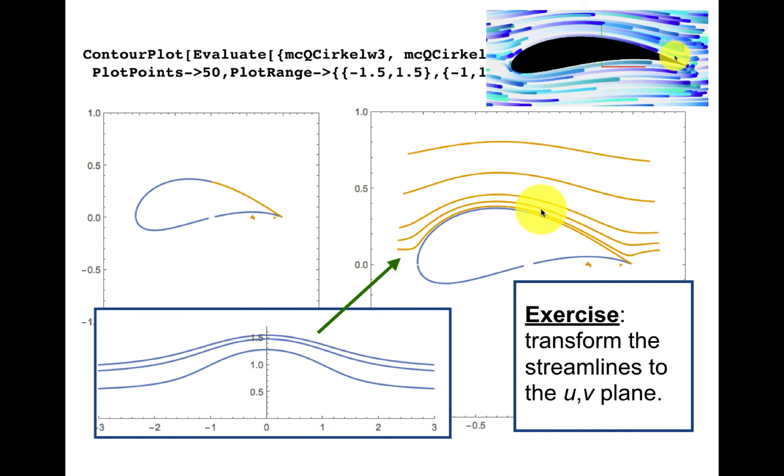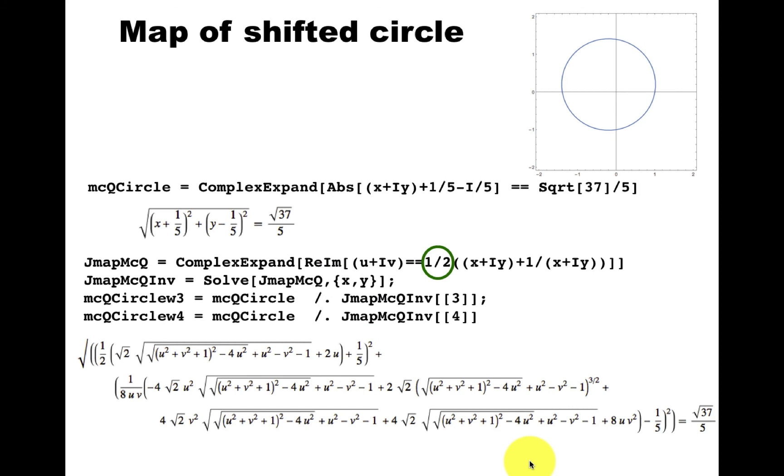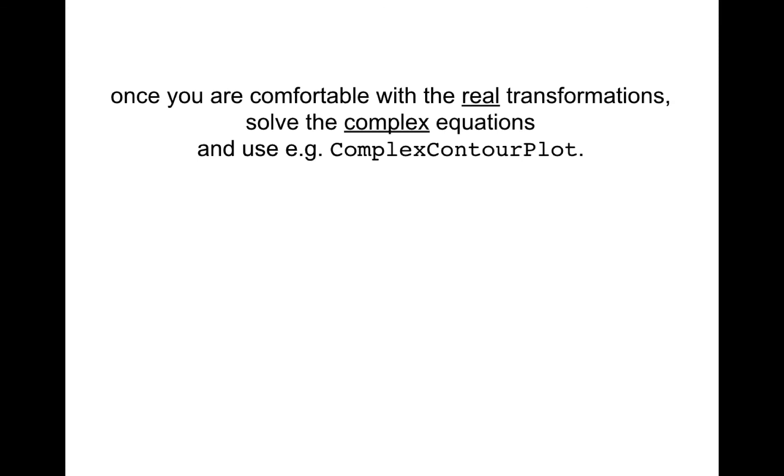Now, I should admit, none of this is particularly elegant. You can't really say this is a beautiful equation. But I claim that if you mainly jump to solving complex equations, I find students get confused. So in my experience, try to work with the real transformations. Use real variables x, y, and u, and v. And then do these maps explicitly. And then you can appreciate when you solve the complex equations. Which is very natural. After all, we were doing complex maps. So it's natural to do complex contour plot.